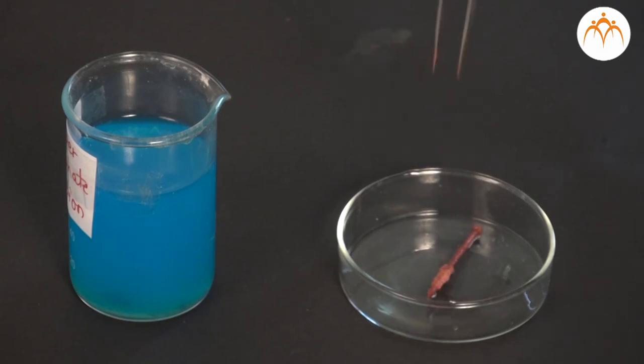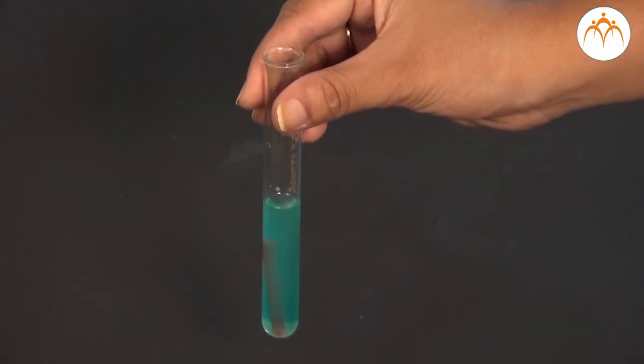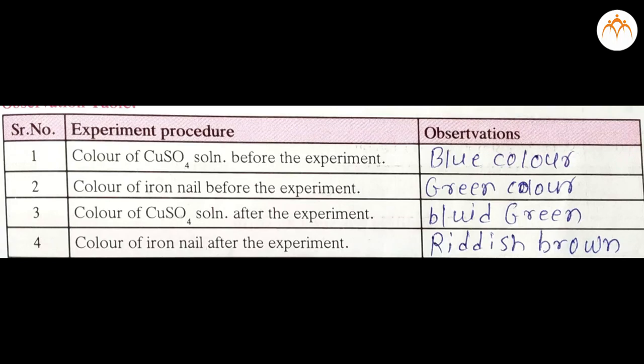Before the reaction, its colour was steel grey. After reaction, it becomes reddish brown as copper is deposited and solution becomes light green after iron displaces copper. This is an example of displacement reaction.